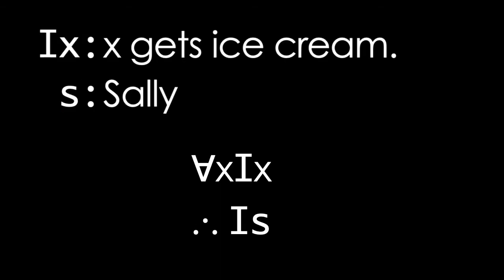We can translate the argument from earlier in this way. Let IX mean X gets ice cream, and let little s be Sally. Then the argument becomes: for all X, IX, therefore IS. Although it will be a little while before we can show that this is valid in QL, it should already be clear that it represents more of the structure of the English argument than SL does.